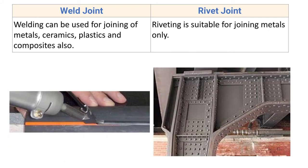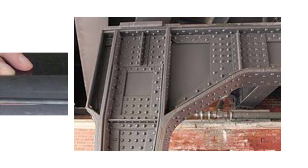Welding can be used for joining metals, ceramics, plastics, and composites, giving it a wide range of applications. Riveting is suitable for joining metals only.